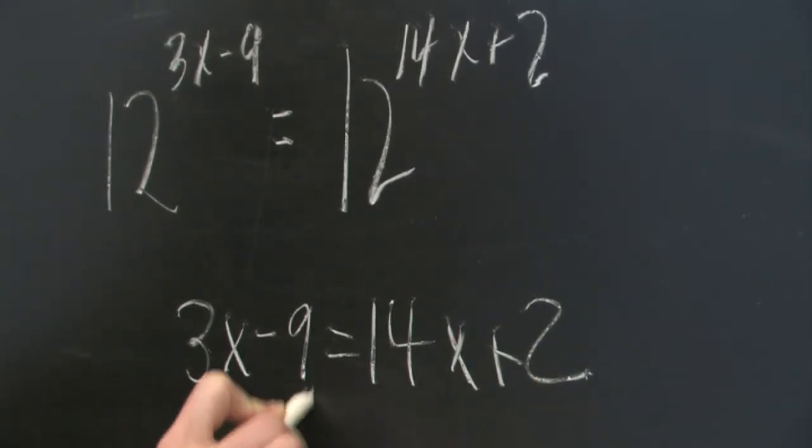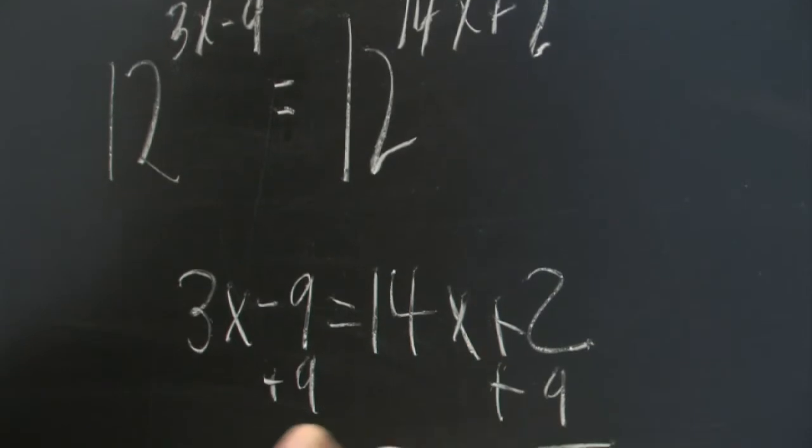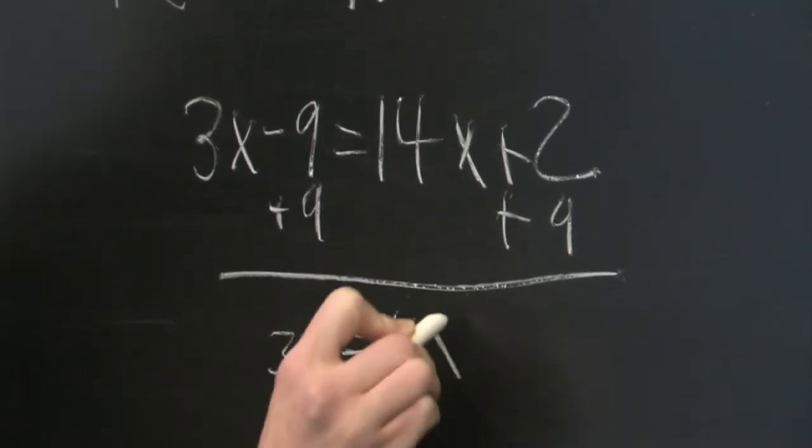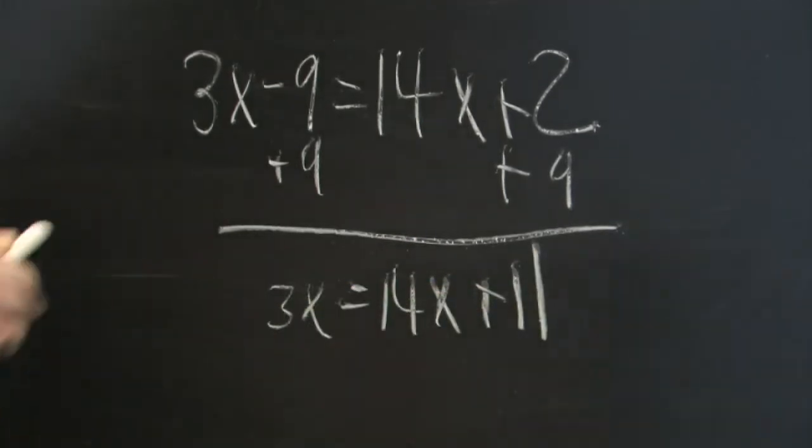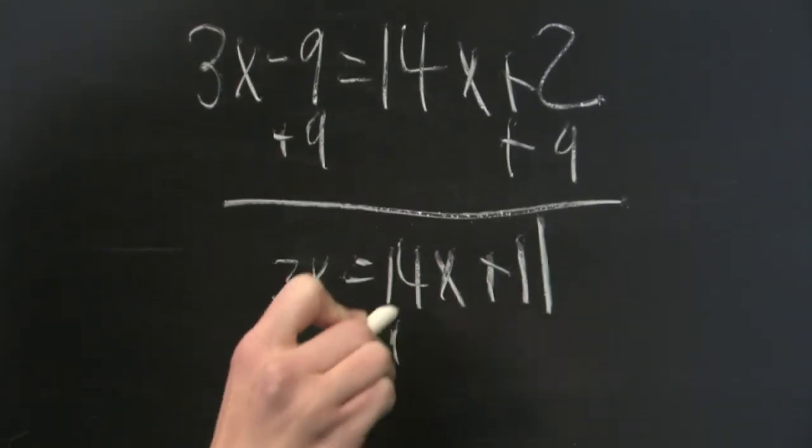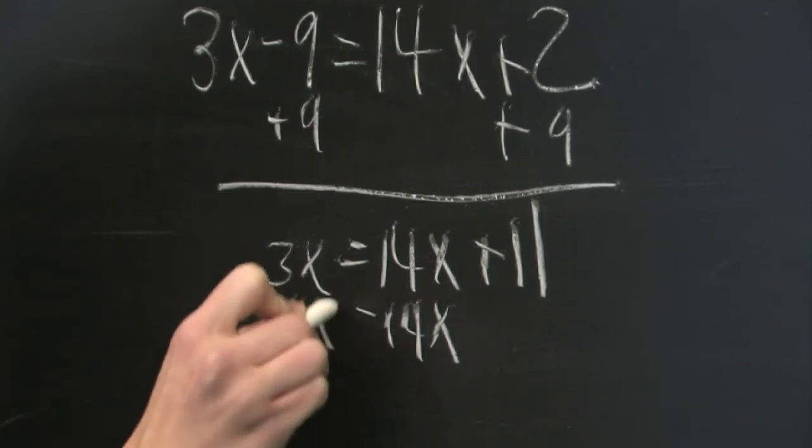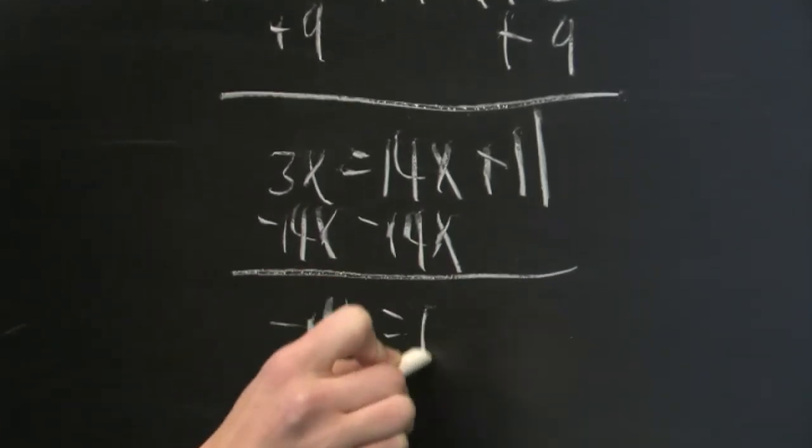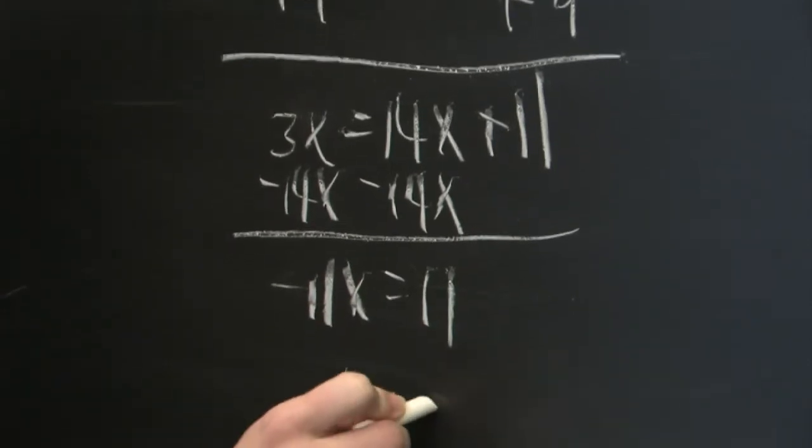We can add 9 to both sides, then subtract 14x from both sides to find that x is equal to minus 1.